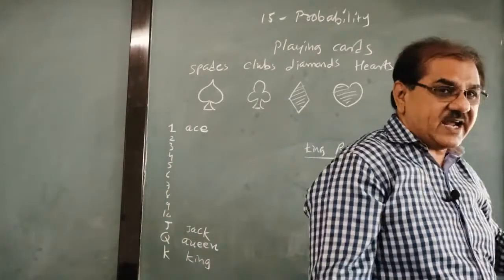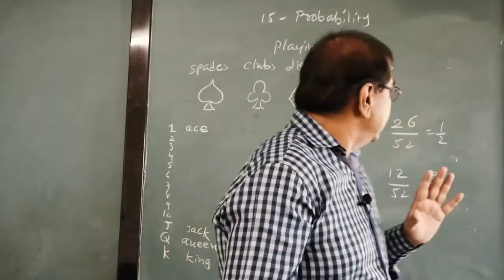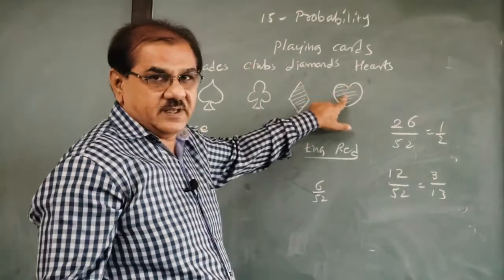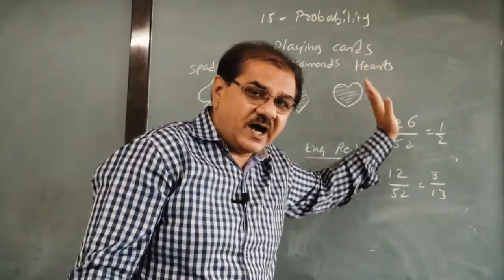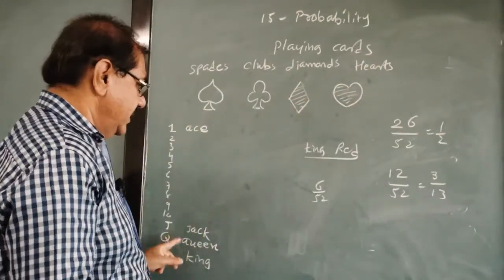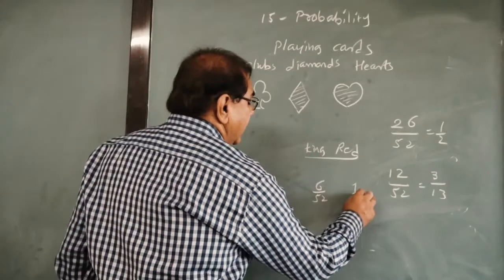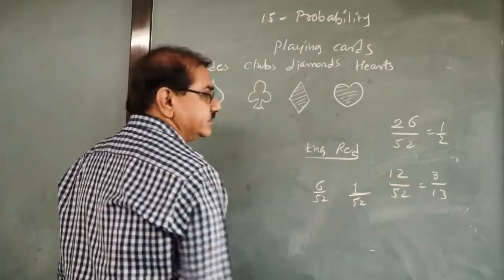It is the jack of hearts. Heart means only this, and how many jacks in heart? Only one. So it is 1 upon 52. Is it clear?